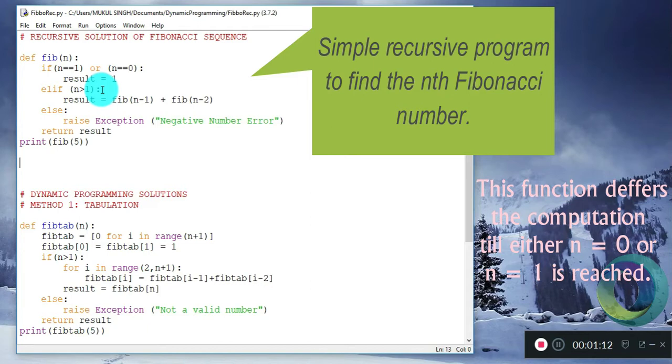When n is greater than 1, we apply the Fibonacci rule: the nth number would be equal to the n minus 1th plus n minus 2th. This would solve and terminate at n equal to 1 or n equal to 0, giving us the answer.